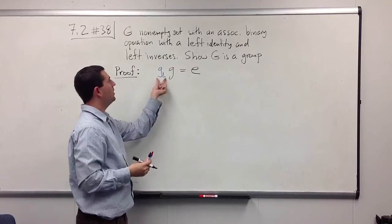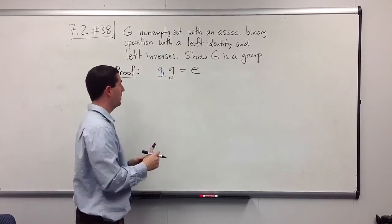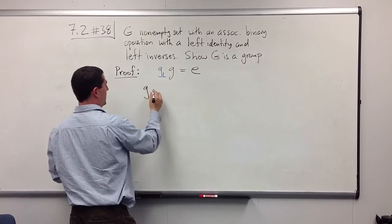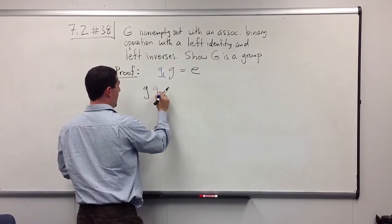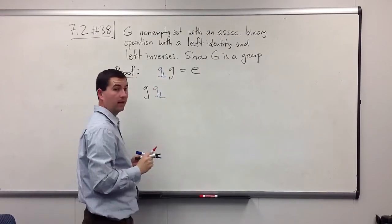But what happens when we put this g_l on the right side? Now, if I write g times g_l, what am I going to get?